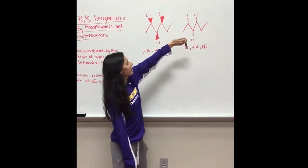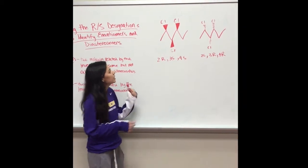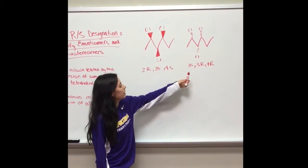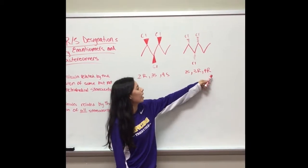So we know what the designation is going to be. It's going to be 2R,3S,4S and this is going to be exactly the opposite. It's going to be 2S,3R,4R. So the R and S is going to switch because the actual bond angle is inverted.